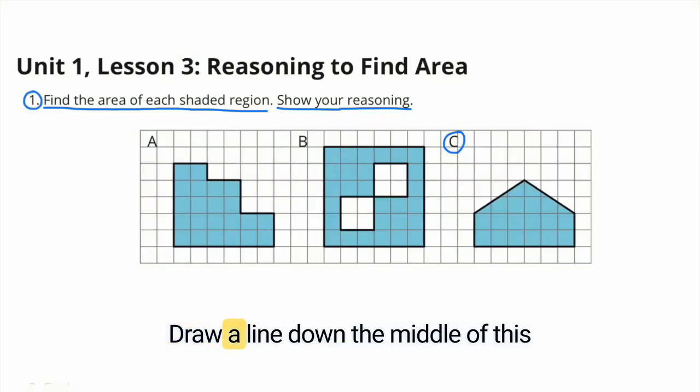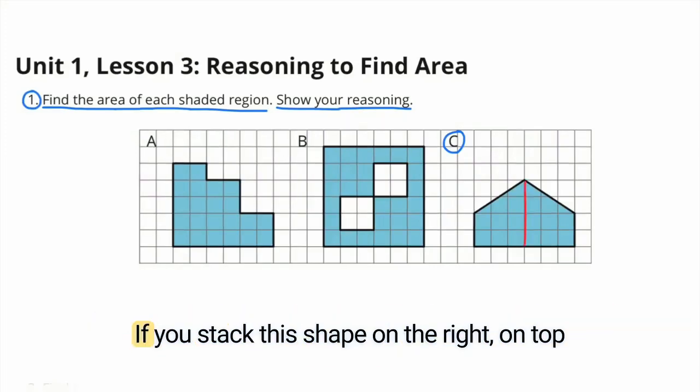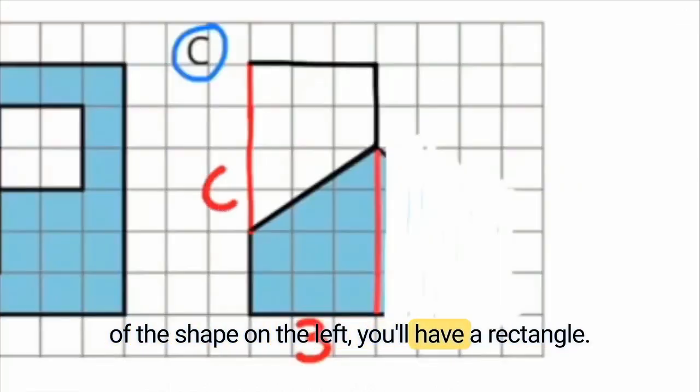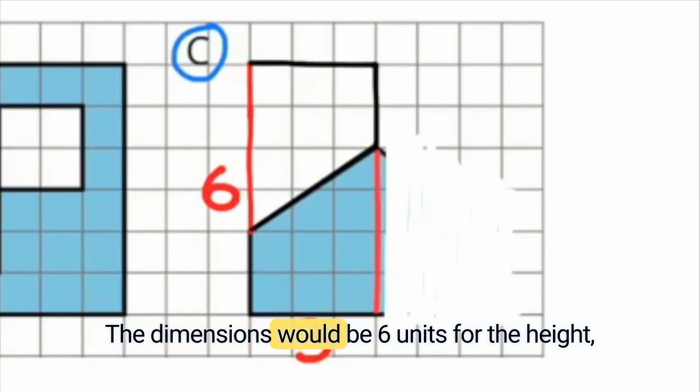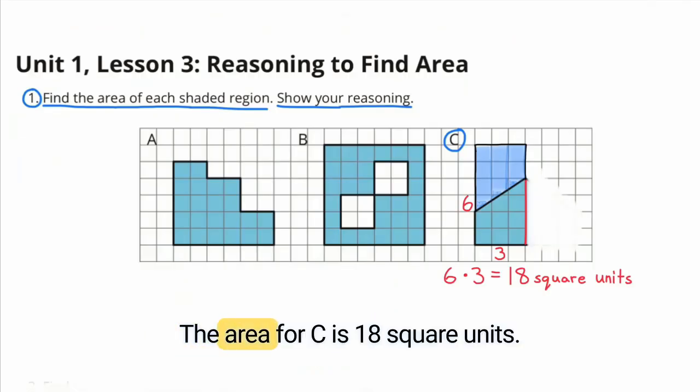C. Draw a line down the middle of this symmetrical shape and you'll notice two identical shapes. If you stack this shape on the right on top of the shape on the left, you'll have a rectangle. The dimensions would be 6 units for the height and 3 units for the width. The area for C is 18 square units.